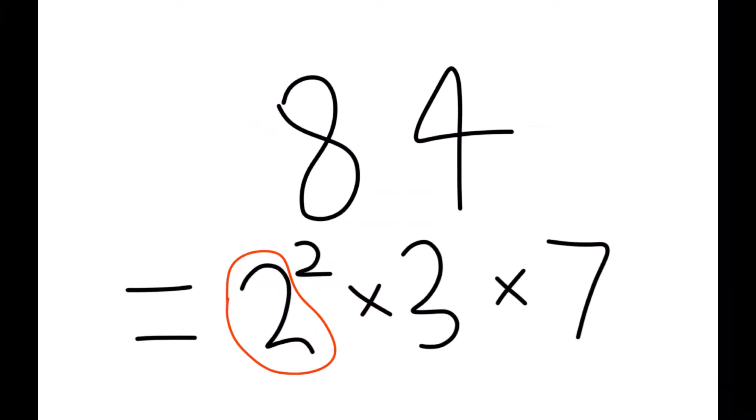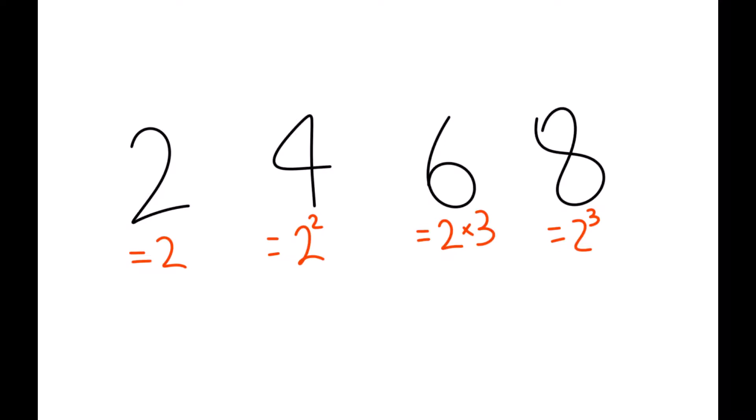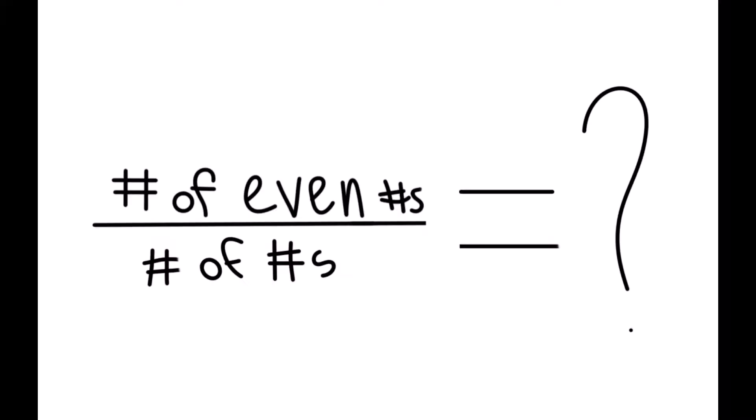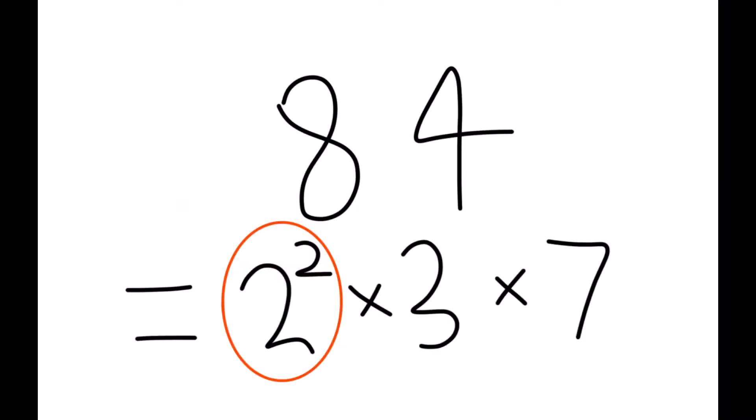Now, as we all know, 2 is a prime. Therefore, it appears in the prime factorization product of some numbers. In fact, it always appears in even numbers' prime factorization products and only even numbers. Odd numbers can't be multiples of 2. This is one thing to take note of when finding out the proportion between odd numbers and even numbers.